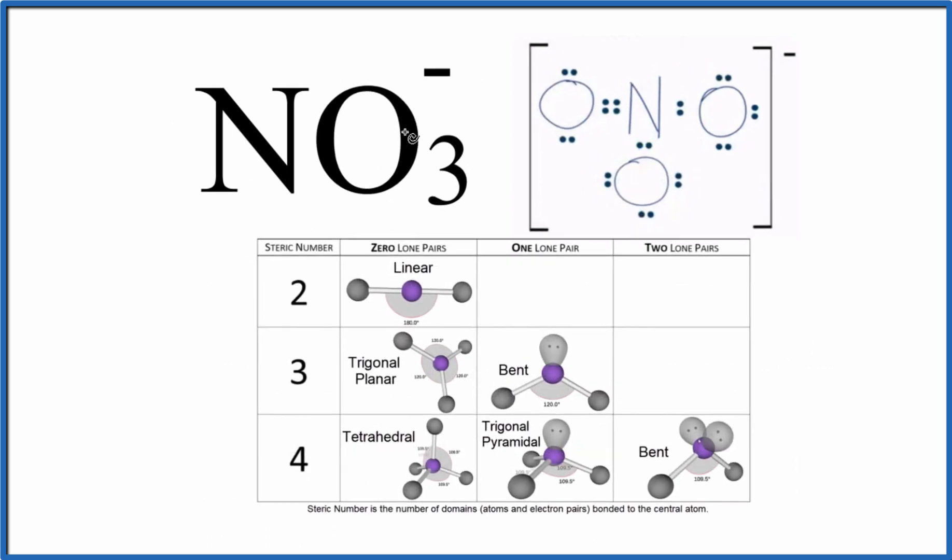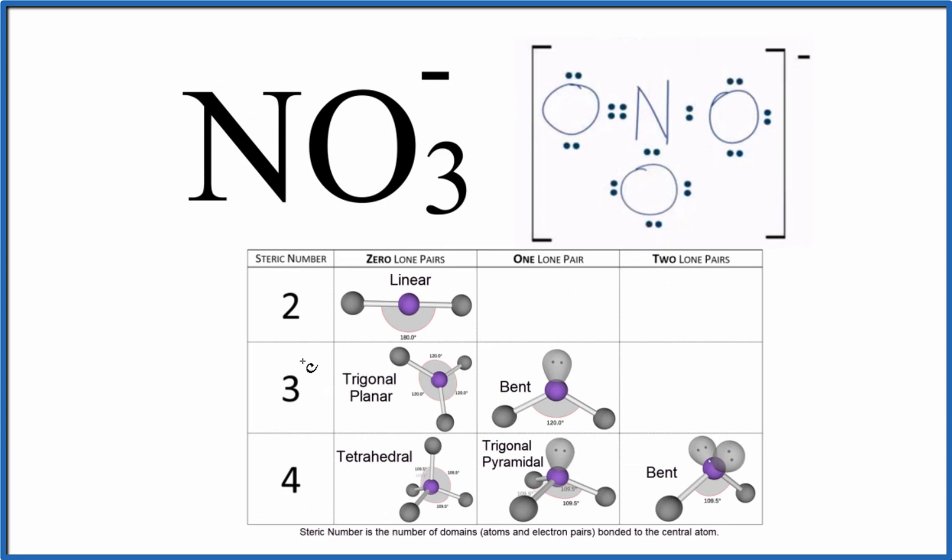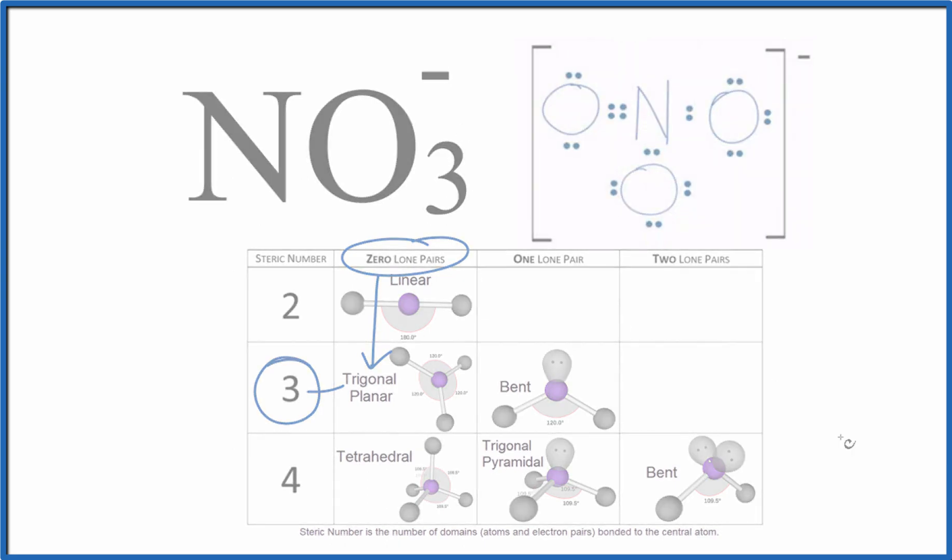We said the steric number for NO3 minus was three and there aren't any lone pairs. These are all involved in chemical bonds. Since we have no lone pairs, zero lone pairs here, we have a trigonal planar molecular geometry for the nitrate ion. This is Dr. B looking at the steric number for NO3 minus. Thanks for watching.